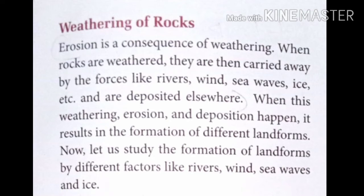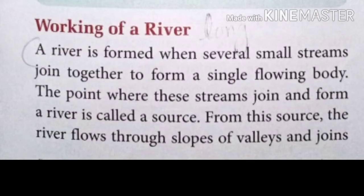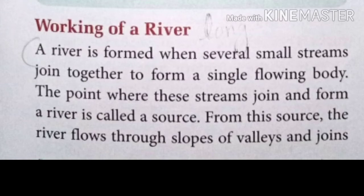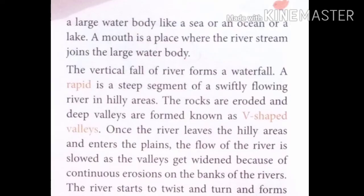The first topic is the working of a river. A river is formed when several small streams join together to form a single flowing body. The point from where these streams join and form a river is called the source. From this source, the river flows through slopes of valleys and joins a large water body like a sea, ocean, or lake. The place where the river joins this large body is called the mouth.